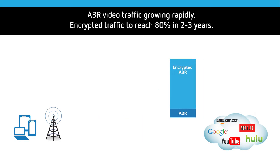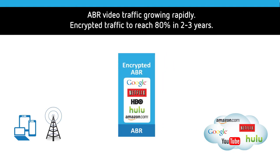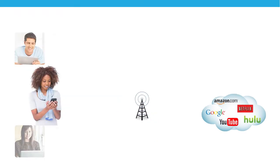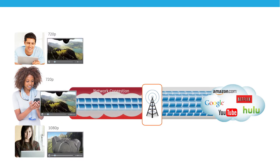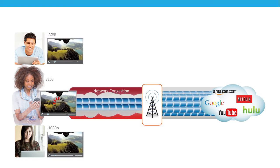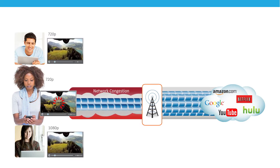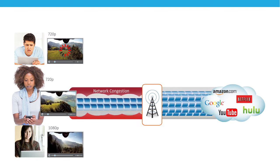ABR videos are also mostly encrypted now, as content providers such as Google and Netflix push for privacy. Unfortunately, ABR was not designed with mobile networks in mind, and the fluctuations in available bandwidth that are so common in mobile environments undermine the ABR streaming video experience.